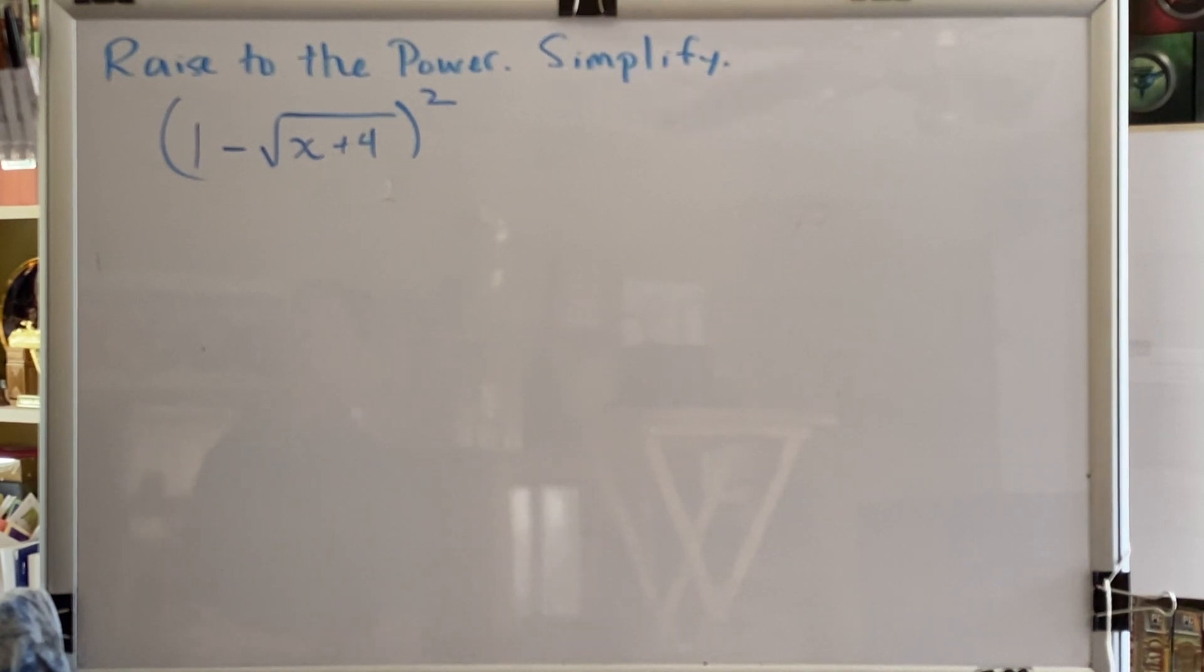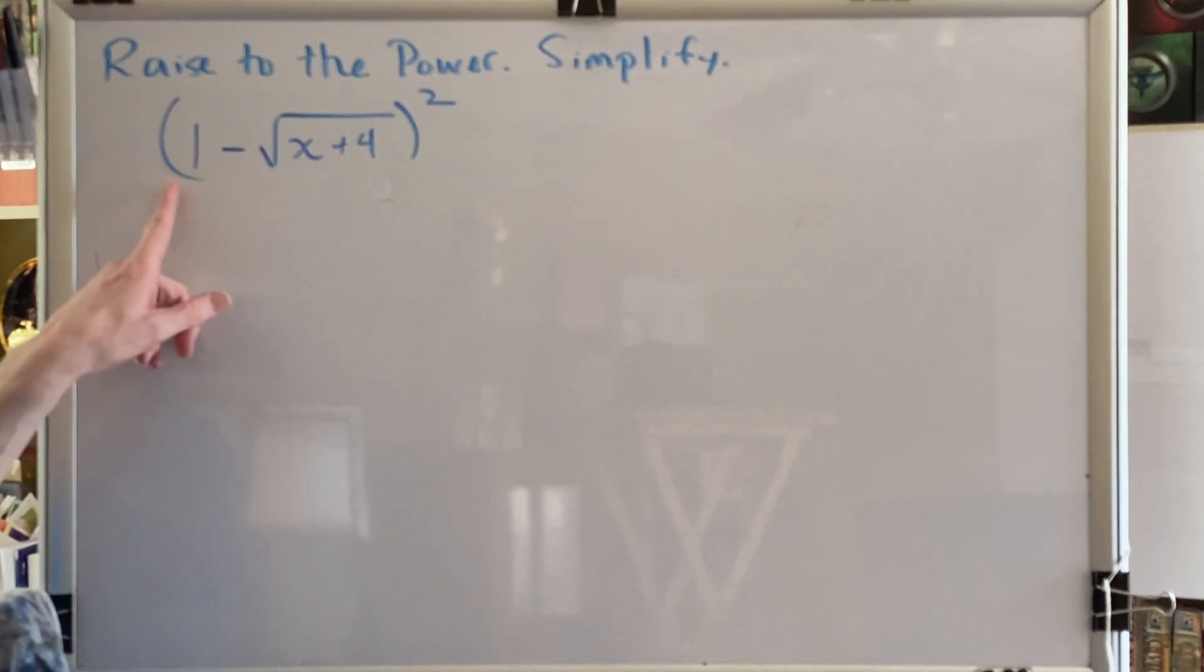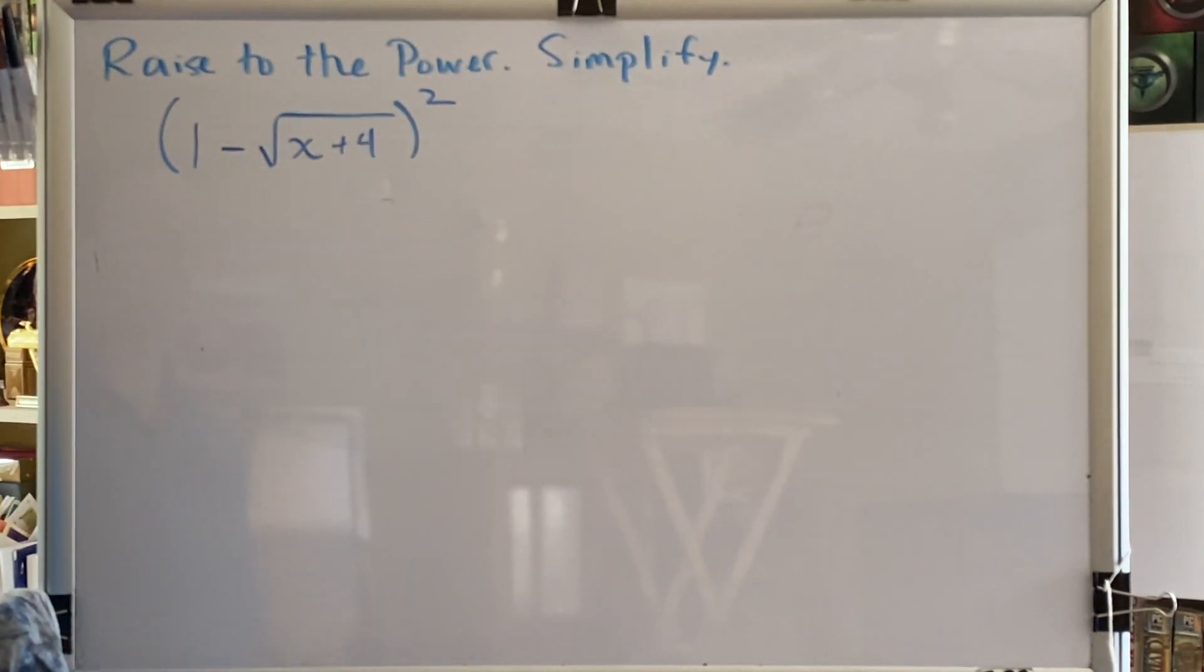Let's look at a problem. Raise to the power, simplify. Alright, we have 1 minus the square root of the sum x plus 4, all in parentheses, raised to the second power.